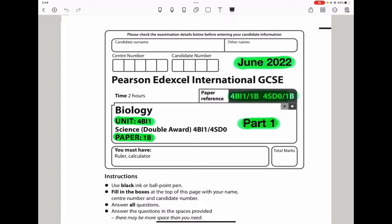Welcome to the Chemistry, Biology, and Math Revision Hub. Today we are doing the Pearson Edexcel International GCSE Biology Paper 1B for June 2022. This is the part 1 video. I will do two more videos and put the links in the description box. Let's begin with question 1.